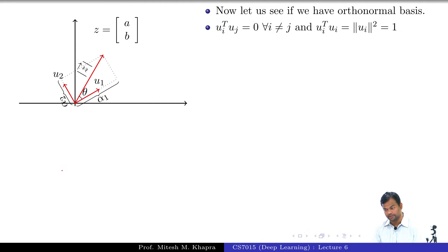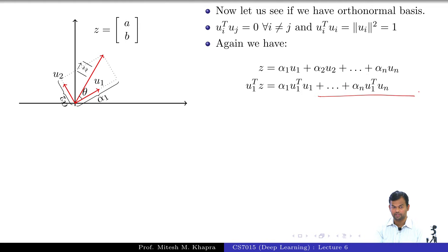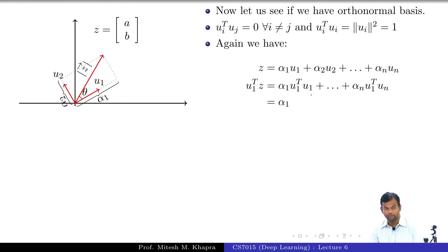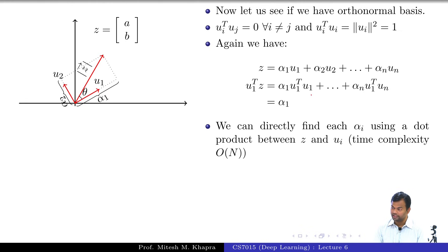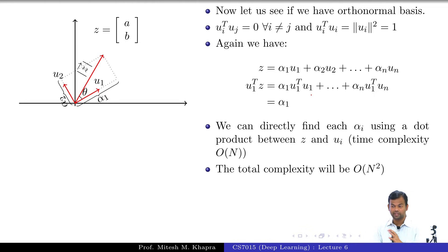What happens in this special case? We can express any vector z as a linear combination of the orthonormal basis vectors. If I pre-multiply the equation by U₁ᵀ, everything disappears on the right-hand side because those terms are of the form Uᵢᵀ Uⱼ where i ≠ j, and the first term equals 1 — so what remains is α₁. You can directly find α₁ using a dot product of two vectors, which has complexity O(n). We need to find n such alphas, so the total complexity is O(n²). That is why an orthonormal basis is very convenient — you might not even need all of them, just some subset k, requiring only k dot products.